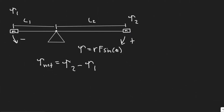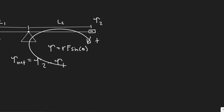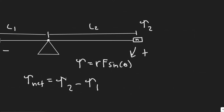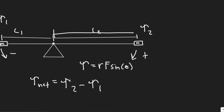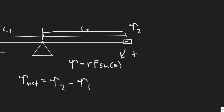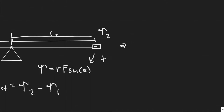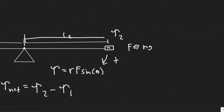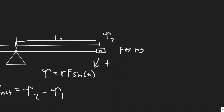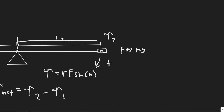Now we need to solve for T1 and T2. The formula for torque is R times F times the sine of theta, where R is the distance from the point of rotation — which is L2 for T2 and L1 for T1. The force in this case is going to be the force due to gravity, which is just equal to mg for both of them since they have the same mass m.